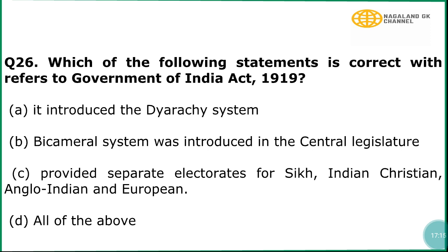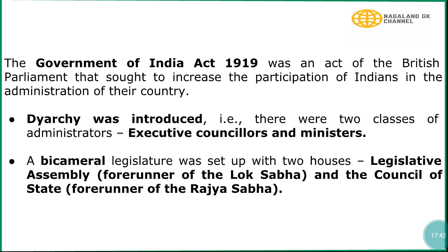Question number 26: Which of the following statements is correct which refers to the Government of India Act 1919? The correct answer is option number D, all of the above — it introduced the Diarchy system, a Bicameral system was introduced in the central legislature, and it provided separate electorate for Sikhs, Indian Christians, Anglo-Indians, and Europeans. In explanation, the Government of India Act 1919 was an act of the British Parliament that sought to increase the participation of Indians in the administration of their country. Diarchy was introduced, meaning there were two classes of administrators: executive councilors and ministers. A Bicameral legislature was set up with two houses — the Legislative Assembly, forerunner of the Lok Sabha, and the Council of State, forerunner of the Rajya Sabha.